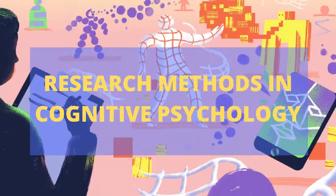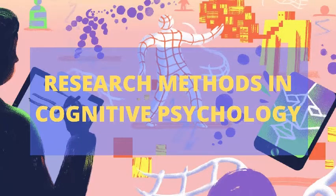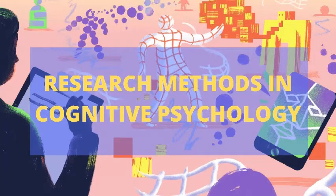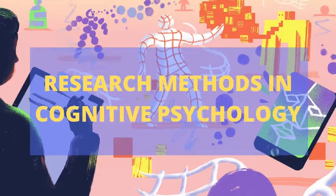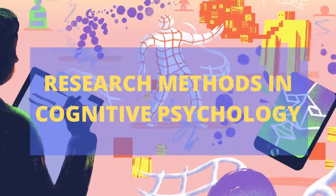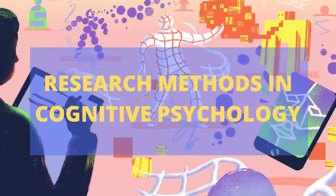Research Methods in Cognitive Psychology. Researchers employ a variety of research methods. These methods include laboratory or other controlled experiments, psychobiological research, self-reports, case studies, naturalistic observation, and computer simulations and artificial intelligence. Each of these methods will be discussed in this video, and to better understand the specific methods used by cognitive psychologists, one must first grasp the goals of research in cognitive psychology.